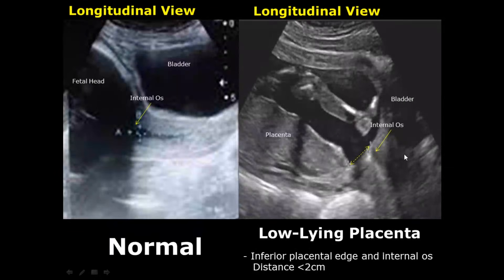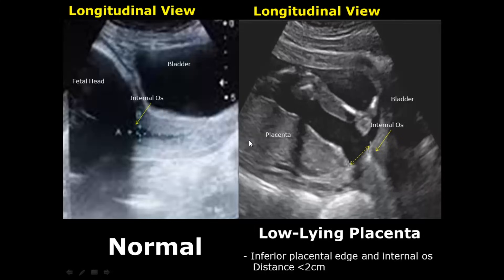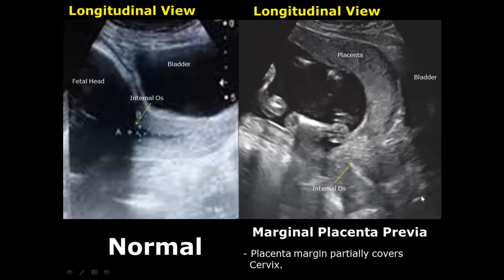Examining the location of the placenta is very important in determining whether the patient will have a C-section or a normal delivery. Over here is the cervix and this junction is the internal cervical os. You can see the fetal head — this is good because the fetus is in cephalic presentation. Over here we have the placenta that is very near the internal os; we have to measure this distance between the internal os and the placental margin. If it is less than two centimeters, then this is a low-lying placenta and a C-section will be needed.